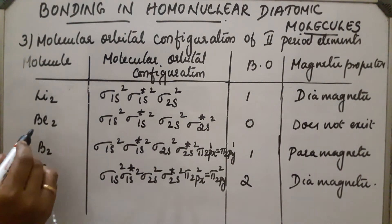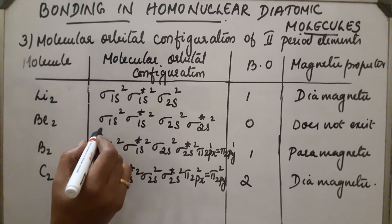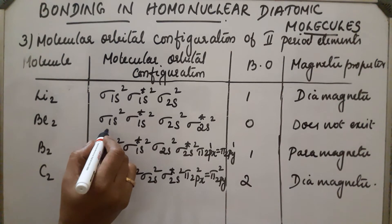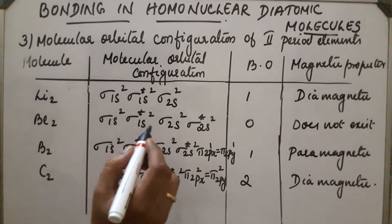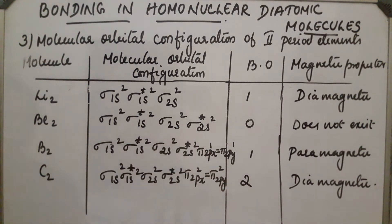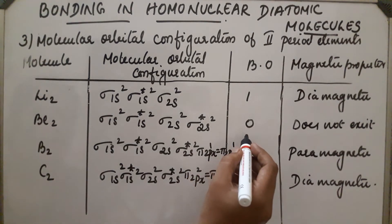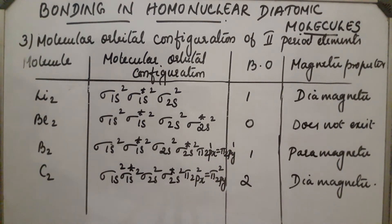The second second-period molecule is Be₂. Its electronic configuration is sigma 1s², sigma star 1s², sigma 2s², sigma star 2s². The bond order is 0, so the molecule does not exist.